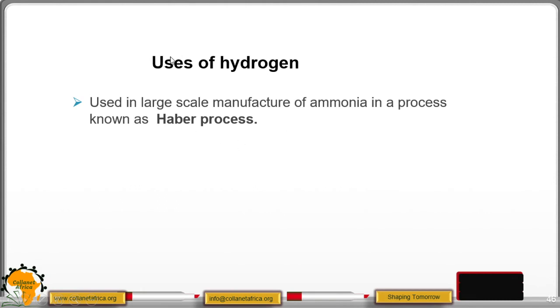Lastly, we are going to look at the uses of hydrogen gas. It is used in large-scale manufacture of ammonia in a process known as Haber process. You shall look at this when you come to Form 4.